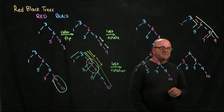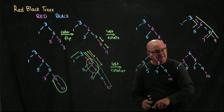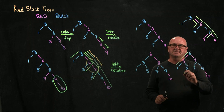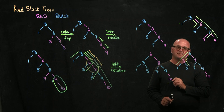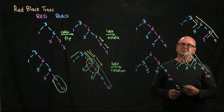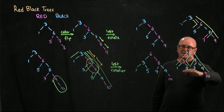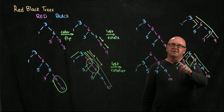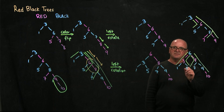Now we fix the colors. After a rotation, we set the root to be black and the children to be red. So we set the 6 to be black and the children — the 3 and the 8 — to be red. The other colors are not affected; they stay the same. Is this a valid red-black tree? Every path from root to leaf has two black nodes and there are no two consecutive red nodes — so yes, this is a valid red-black tree.